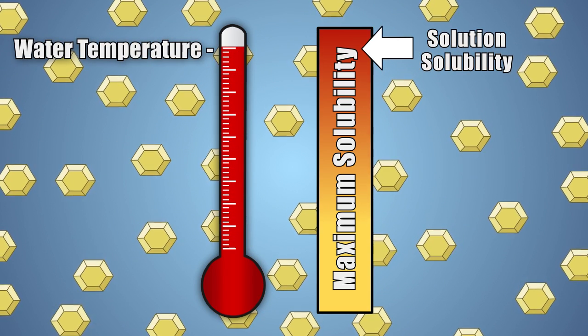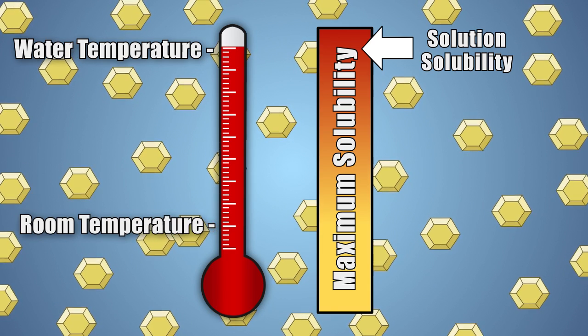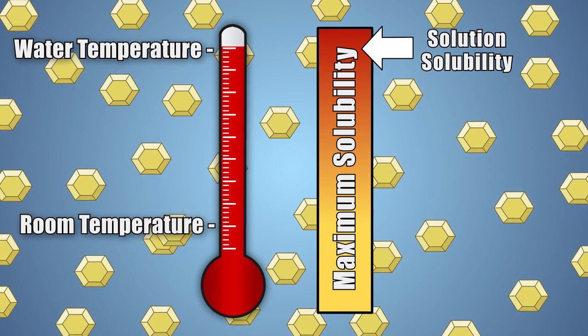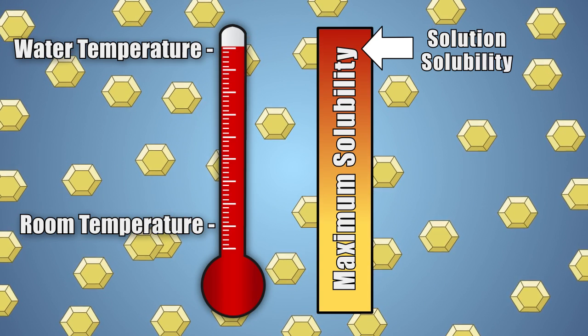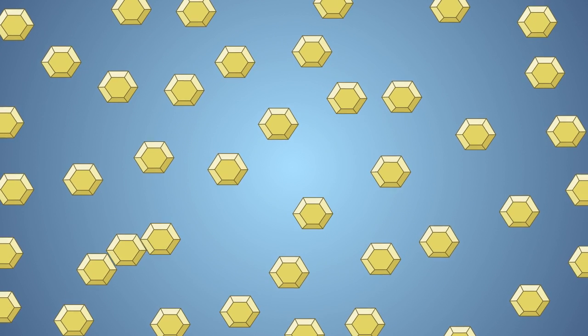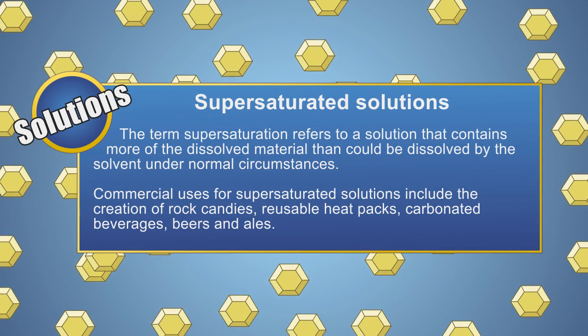In our experiment, our water's temperature is much higher than room temperature. This means that the amount of alum we can dissolve into the water is much greater than if the water was at room temperature. This creates a supersaturated solution.